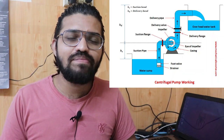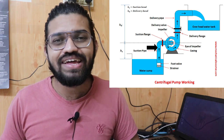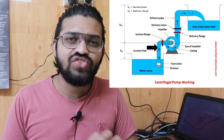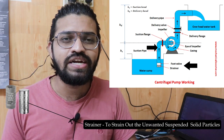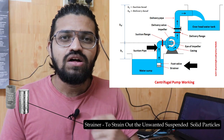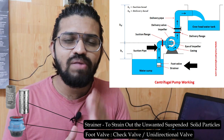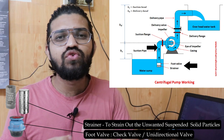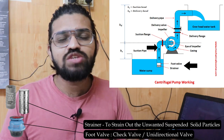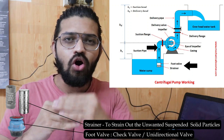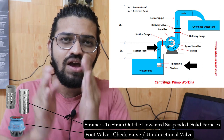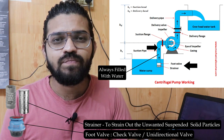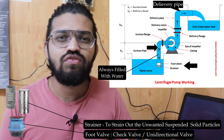The suction pipe must have a larger diameter than the delivery pipe to avoid cavitation. A strainer and foot valve are connected to the suction pipe. The strainer eliminates debris and suspended solid particles. The foot valve acts as a check valve, allowing fluid to flow in one direction only, preventing water from falling back into the reservoir to avoid the need for repeated priming. At the end, there is a delivery pipe with another check valve.